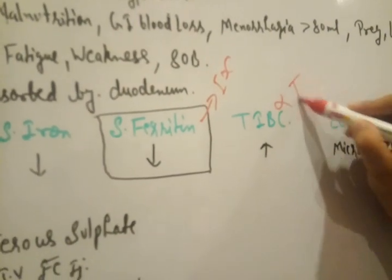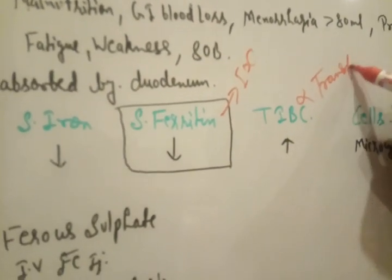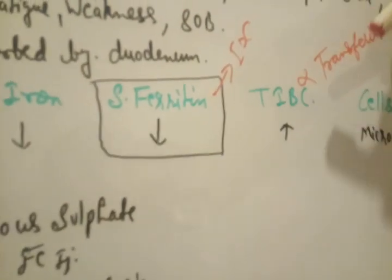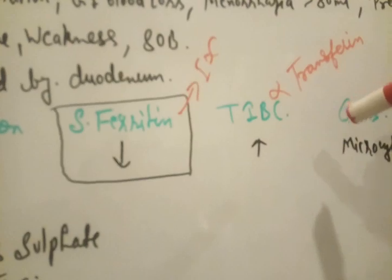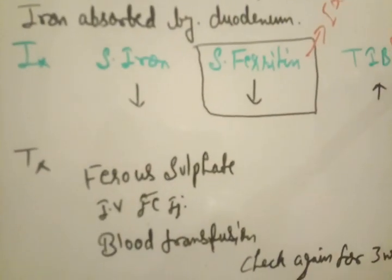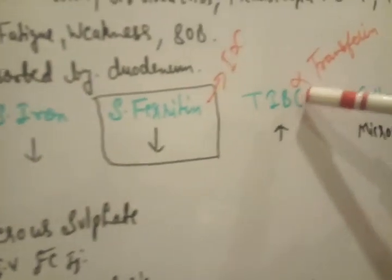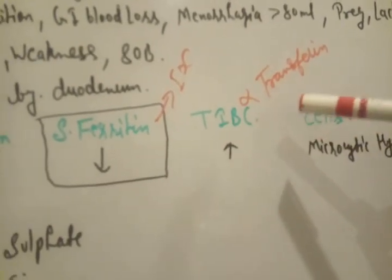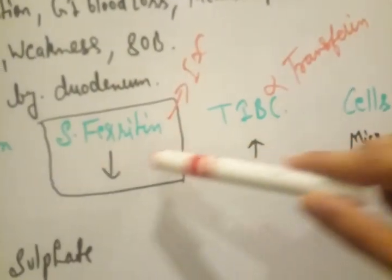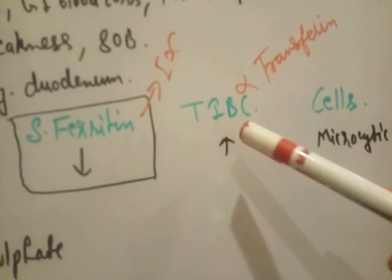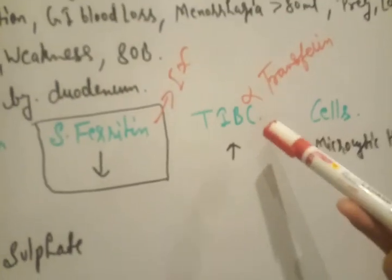Total iron binding capacity is directly proportional to transferrin. TIBC, total iron binding capacity increases. Why? Because when serum iron and ferritin decrease, total iron binding capacity's work is to bind with iron. When there is severe deficiency of iron and serum ferritin, they like to bond with them, and that's why their work increases.